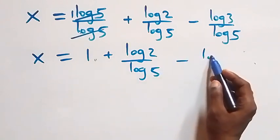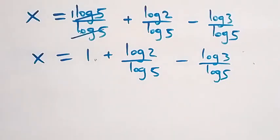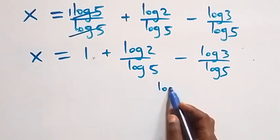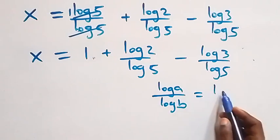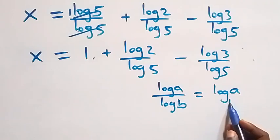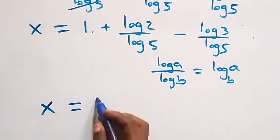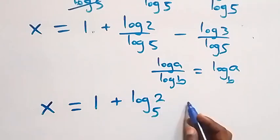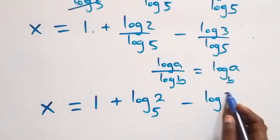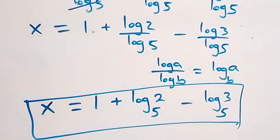Applying the change of base formula — log a over log b equals log a to base b — this becomes x equals 1 plus log 2 to base 5, minus log 3 to base 5. So the value of x in this problem is 1 plus log₅2 minus log₅3. Now let's check if this satisfies the original equation.